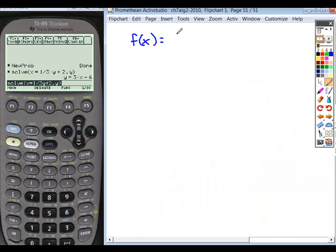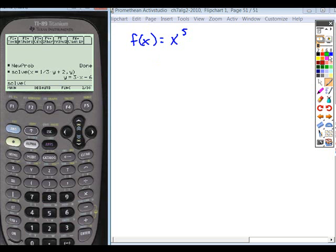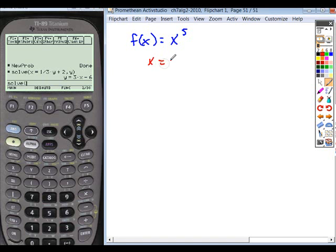And if you have a function x to the fifth, I want you to see if you can solve for its inverse. Exchange the x and the y. And solve for y. You can do this by hand. What do you have to do to both sides here?